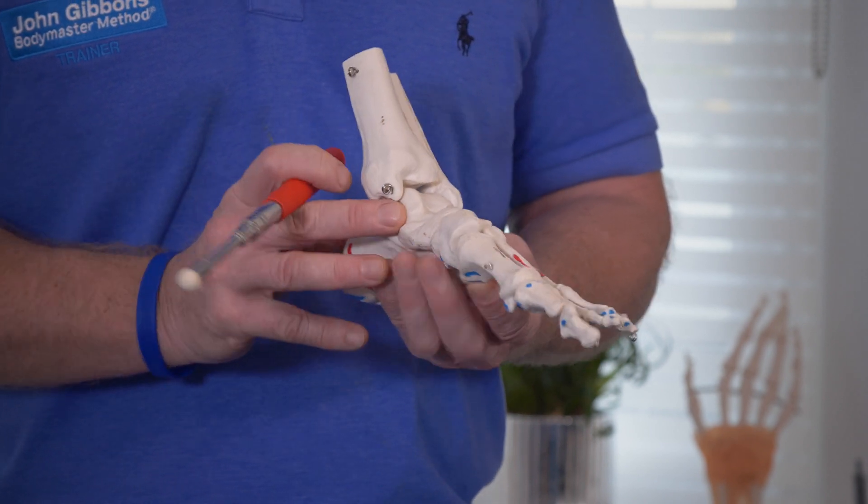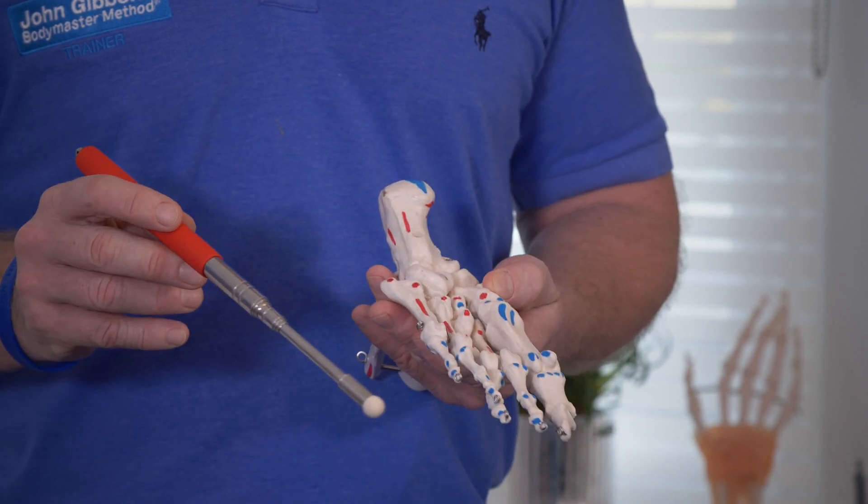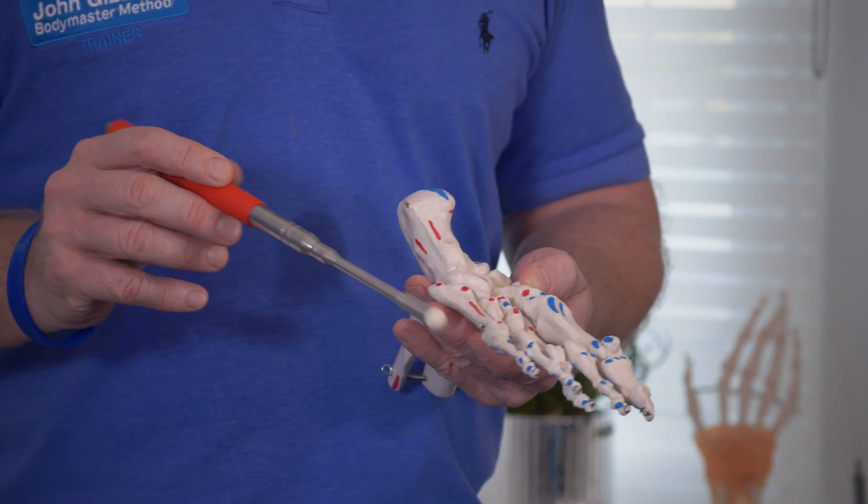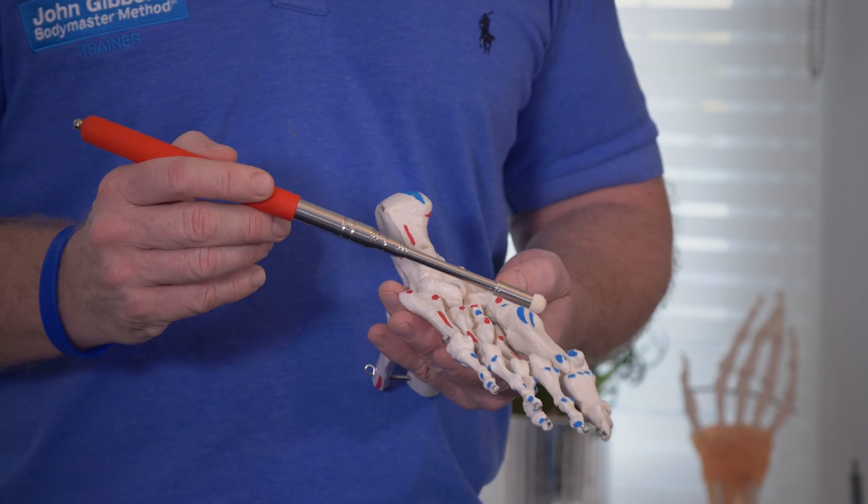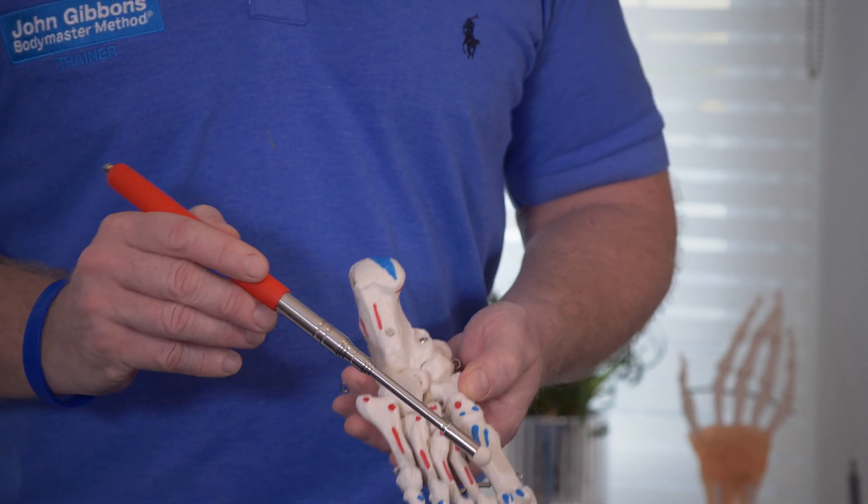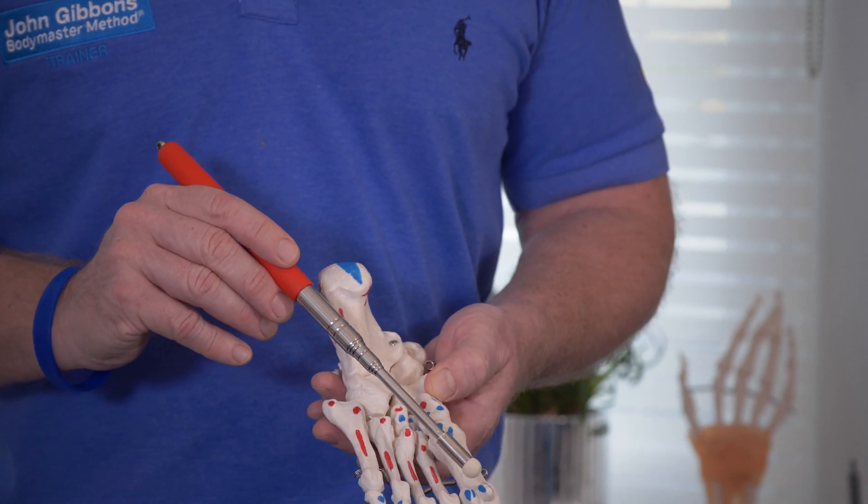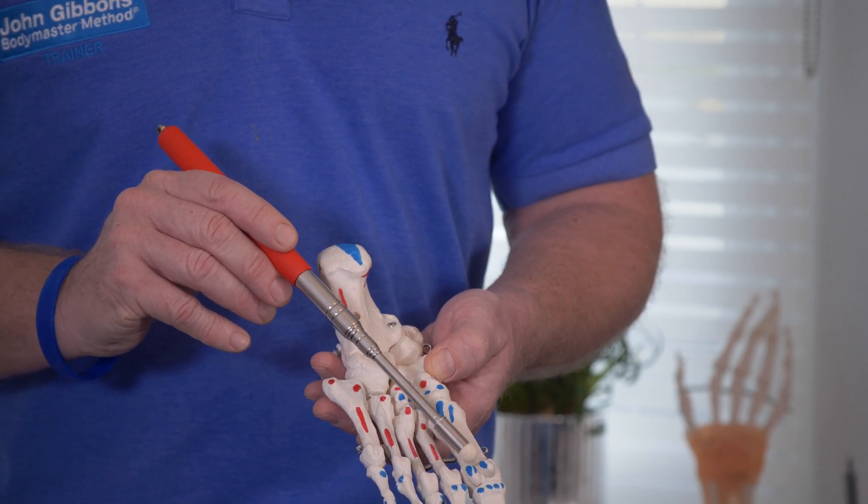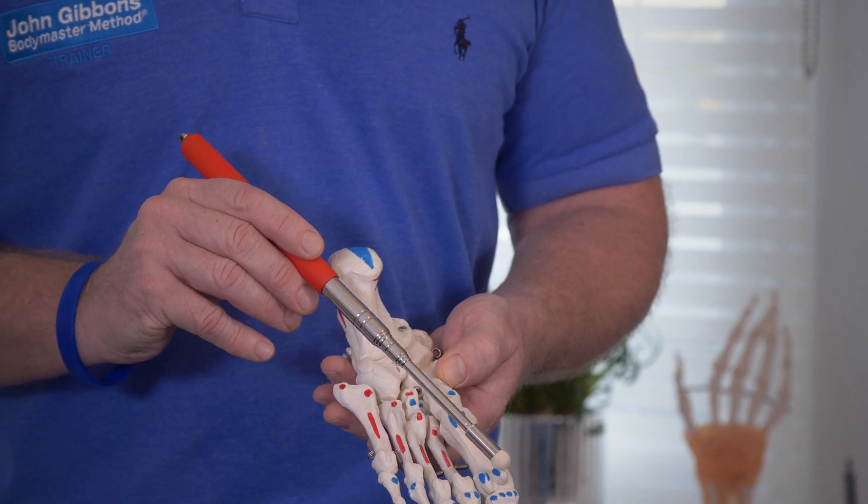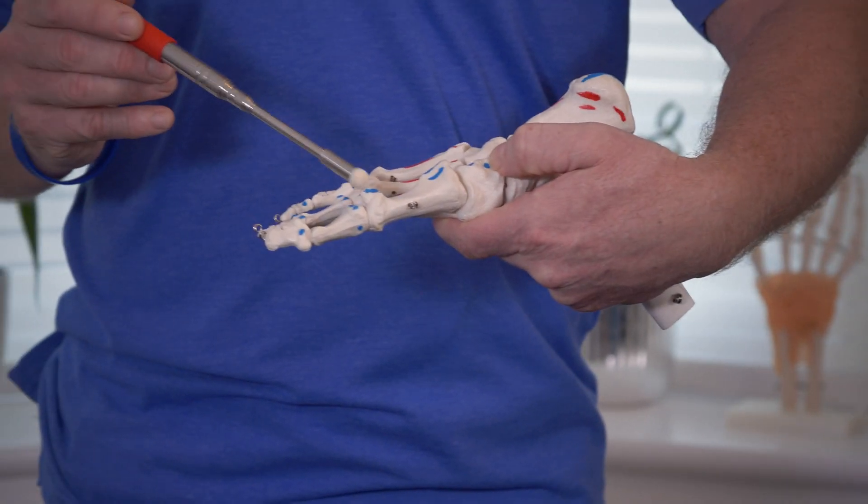If I turn the foot over, there are two sesamoid bones which grow within the tendon of the flexor hallucis brevis. You can see the lateral side and the medial part of the sesamoid bones in here. You can see the two little bones around that area.